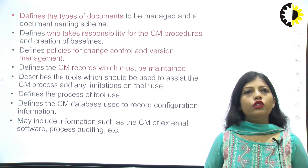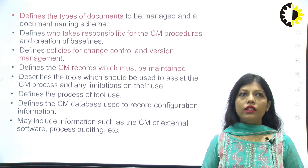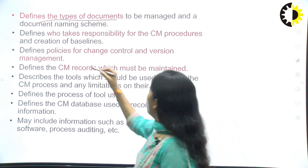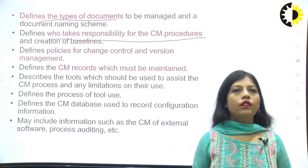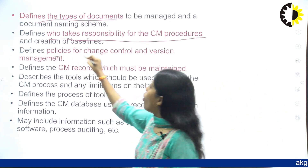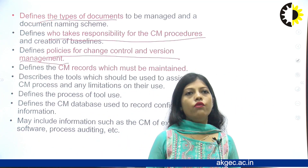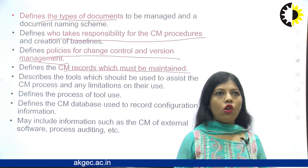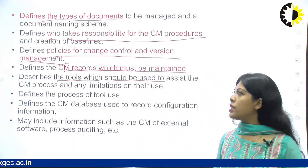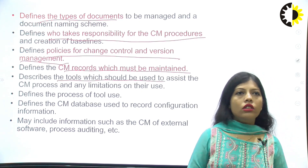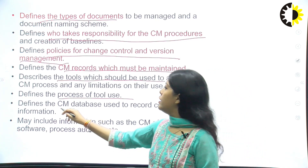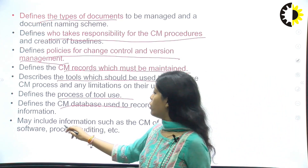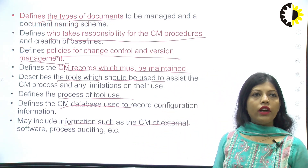During SCM planning, we define the types of documents to be managed and the document naming scheme. We define who takes responsibility for configuration management procedures and their creation. We define policies for change control and version management, define CM records which must be maintained, describe the tools to assist in the CM process and limitations on their use, define the process of tool use, and define the CM database in which configuration information is maintained. It may also include information such as CM of external software processes, auditing, etc.